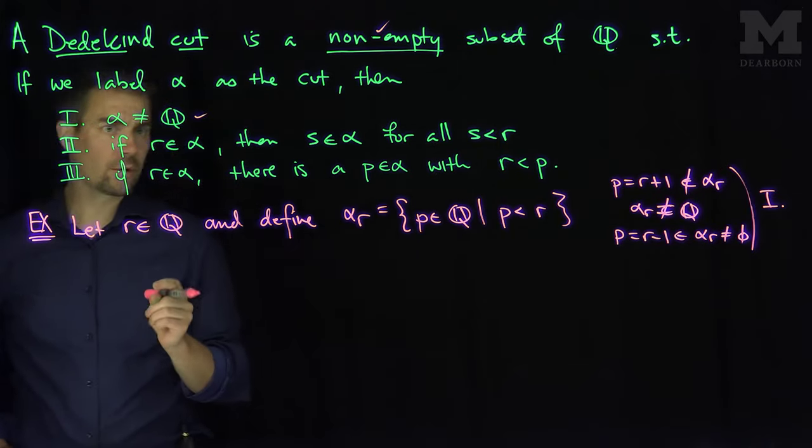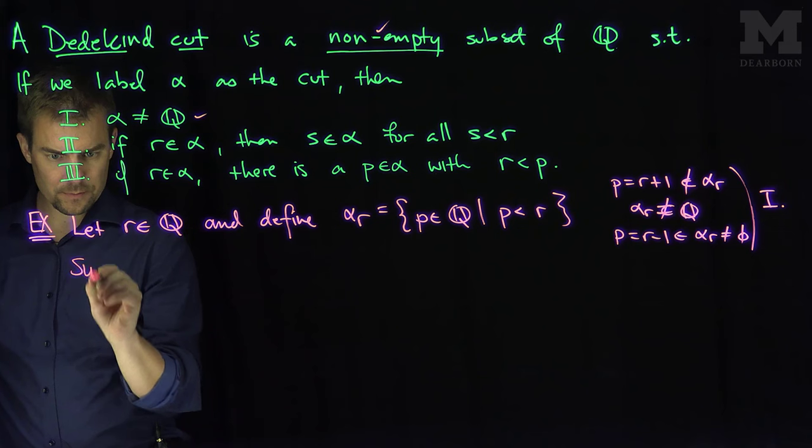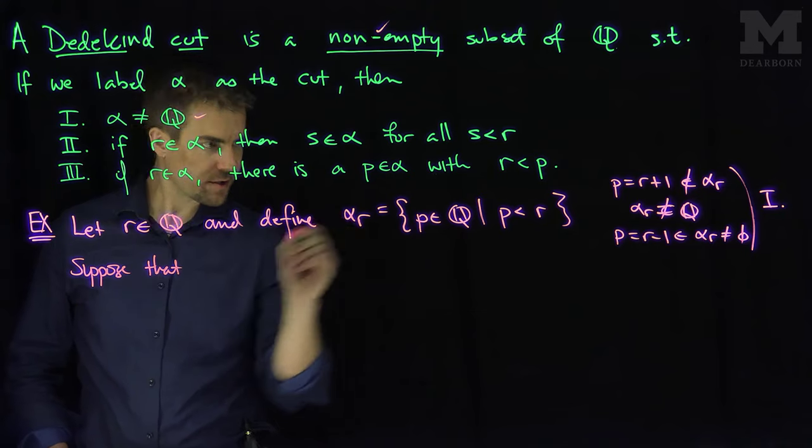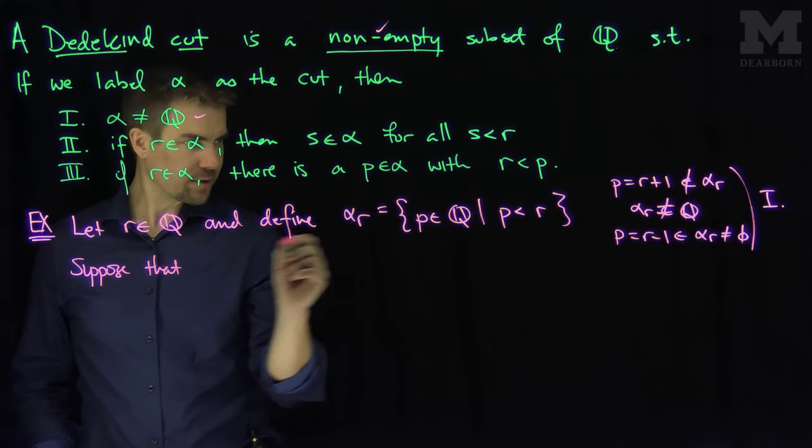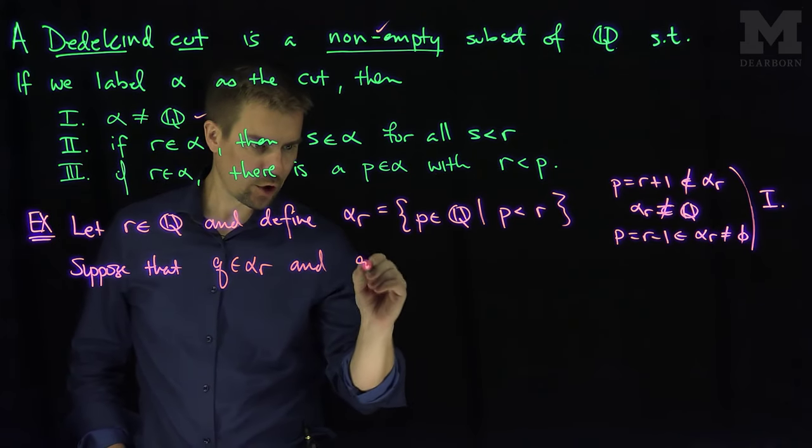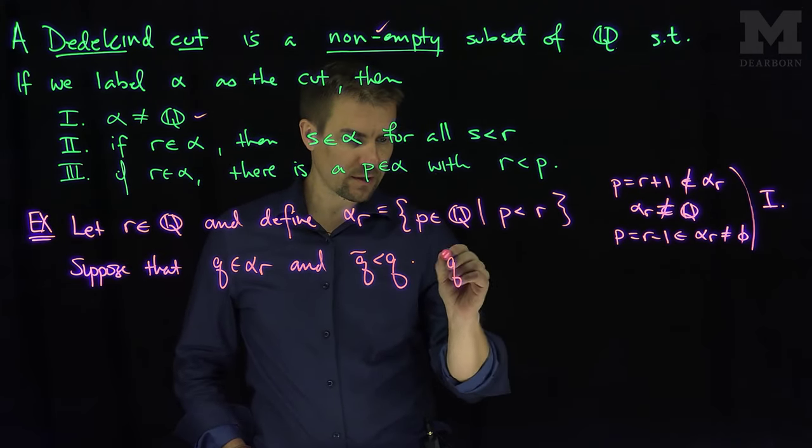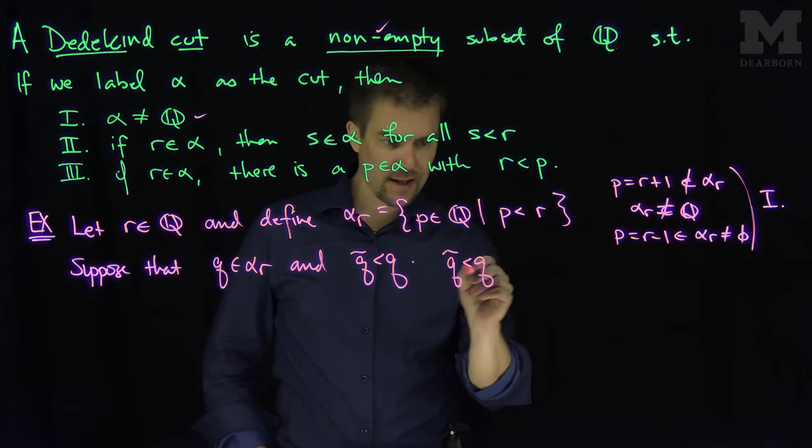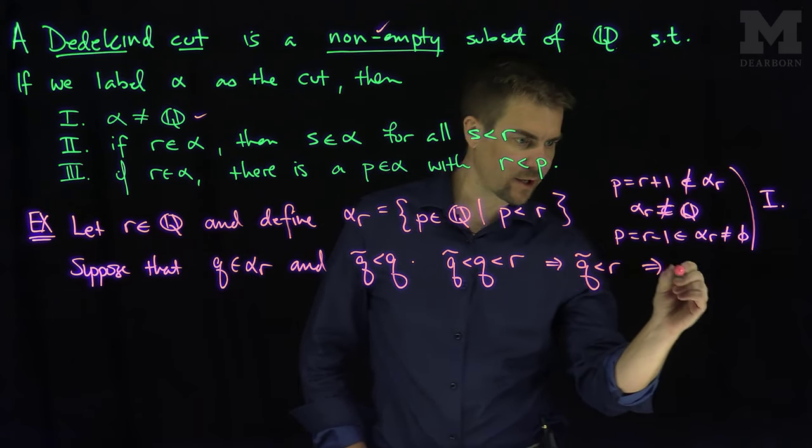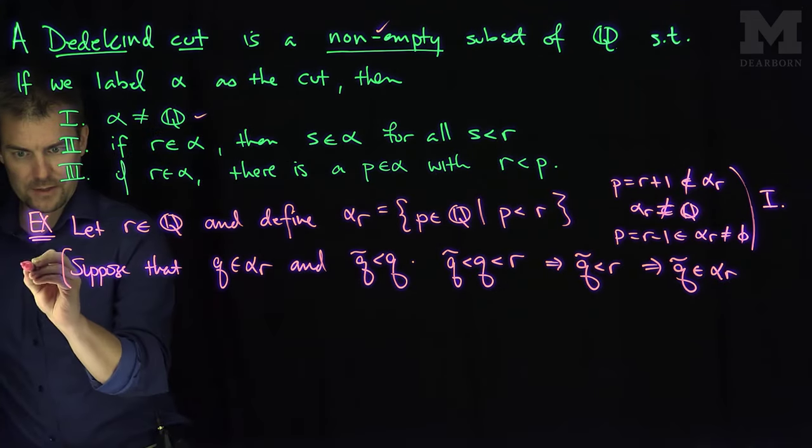If we look at property number two, I want to show that if S is less than R, then S is in the cut. Suppose that Q is in the cut alpha R, and that Q tilde is a number that's less than Q. By the transitive property of ordering, Q tilde is less than Q, and since Q is in alpha R, that says that Q is less than R, which implies that Q tilde is less than R. That says that Q tilde is in the cut alpha R. This statement says that number two is true.